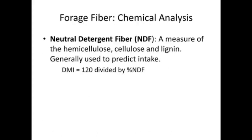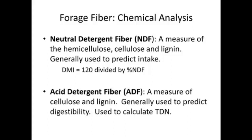Forage fiber is another important aspect of a forage test. Neutral detergent fiber, or NDF, is a measure of hemicellulose, cellulose, and lignin — all cell wall components. Hemicellulose is generally more digestible than cellulose, which is more digestible than lignin, which is considered relatively indigestible. NDF is used to predict intake using the formula: dry matter intake equals 120 divided by the percentage of NDF. Acid detergent fiber, or ADF, is a measure of cellulose and lignin only — hemicellulose has been dropped out. ADF is used to predict digestibility and is a component used to calculate TDN.